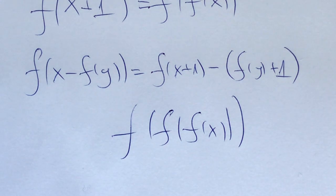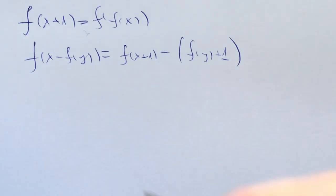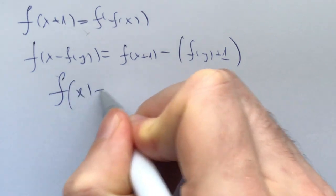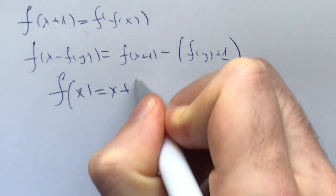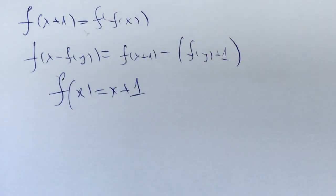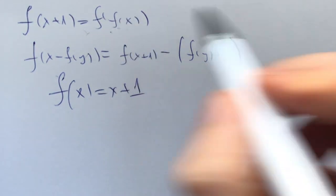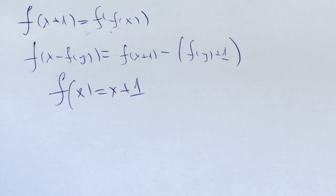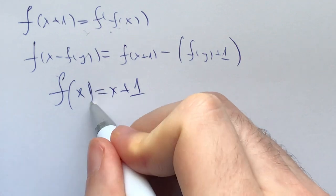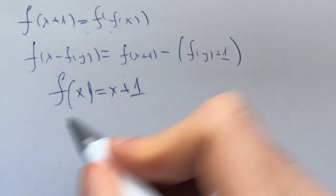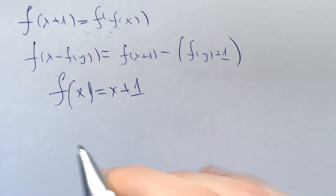Now we are going to do this the way I tried in my theme selection test. We know that the solution to the functional equation is f of x equals x plus 1 — you can check this is actually a solution. Knowing and having a gut feeling that this is the only solution, I try to prove an injection. Let's see what happens if f of a is equal to f of b for some a greater than b.